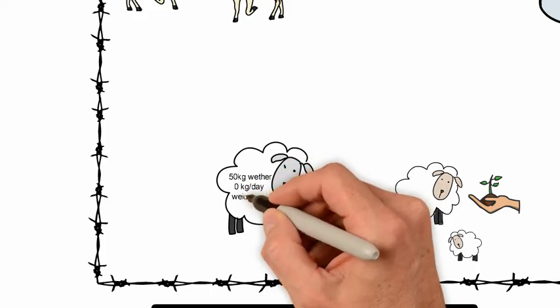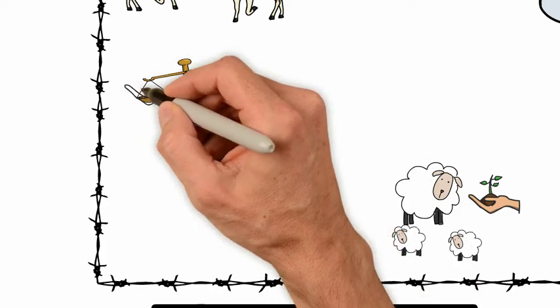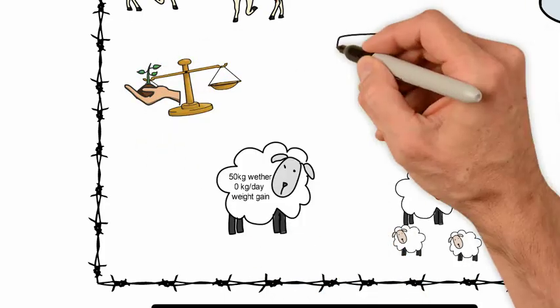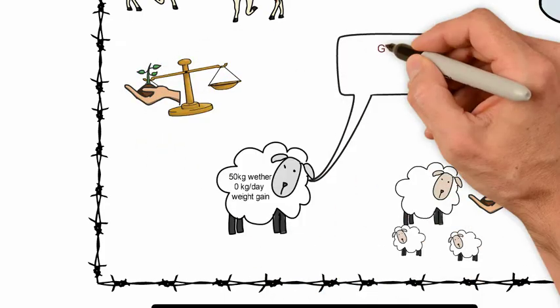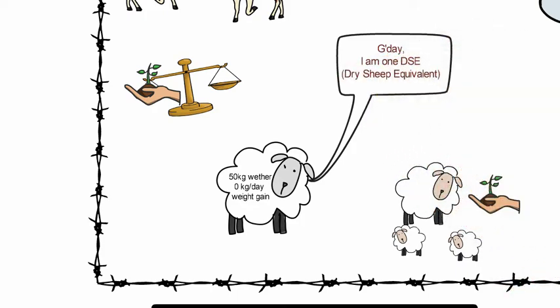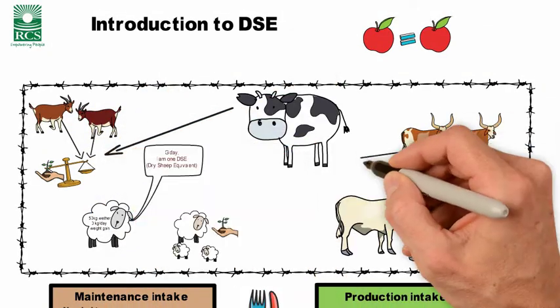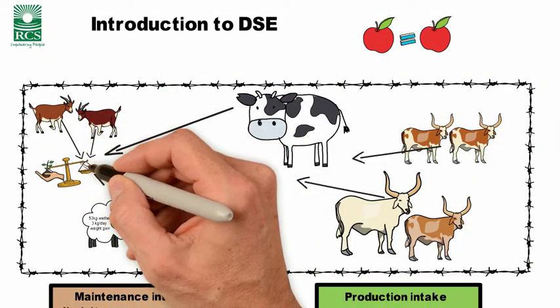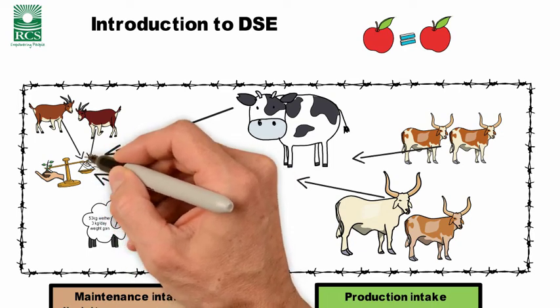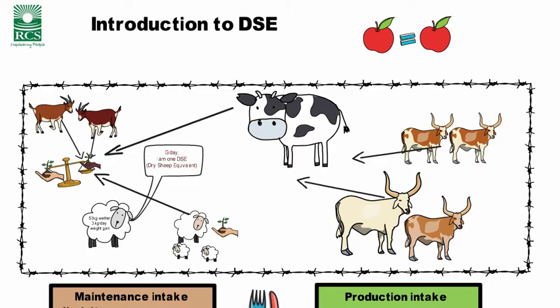They took a 50 kg wether at maintenance, zero weight gain per day, and looked at how much feed that animal ate and called that one DSE, one dry sheep equivalent. That became the standard reference point for everything else. They measured the amount of feed that different types of animals at different levels of productivity and weight ate, and compared that to that one DSE, that one standard reference.